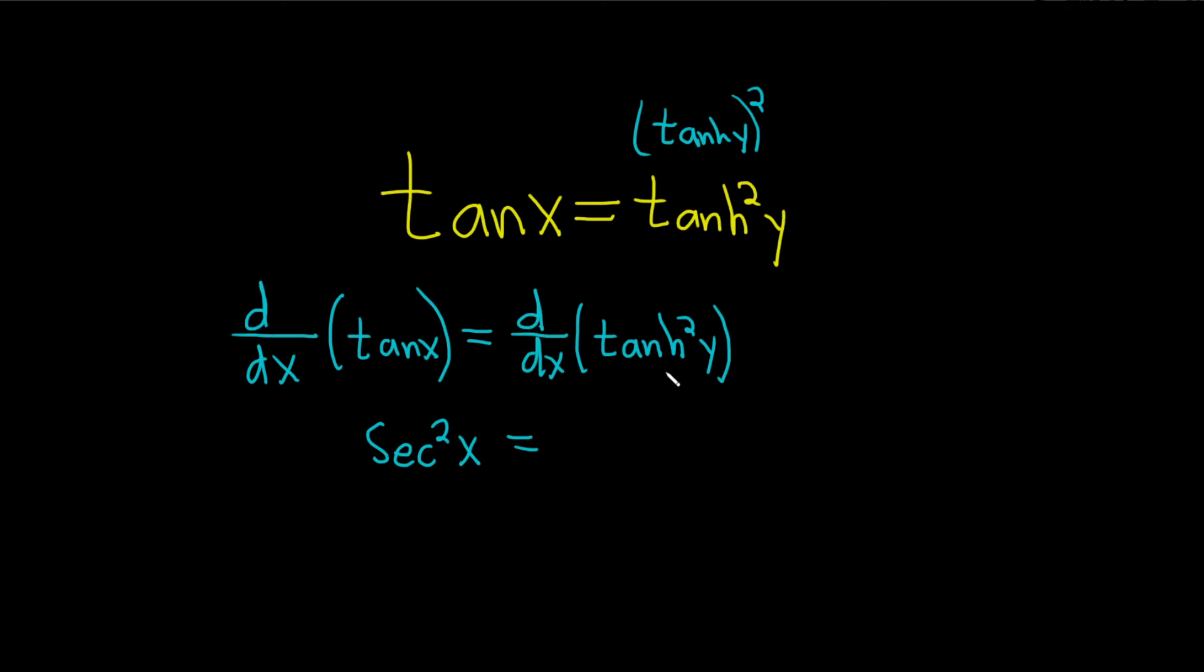And then the derivative of the hyperbolic tangent squared of x, what you have to do here is you have to bring the two down. So you bring the two down like this, so you get two, and then you get the hyperbolic tangent of y. And you subtract one from the exponent, so you get one.